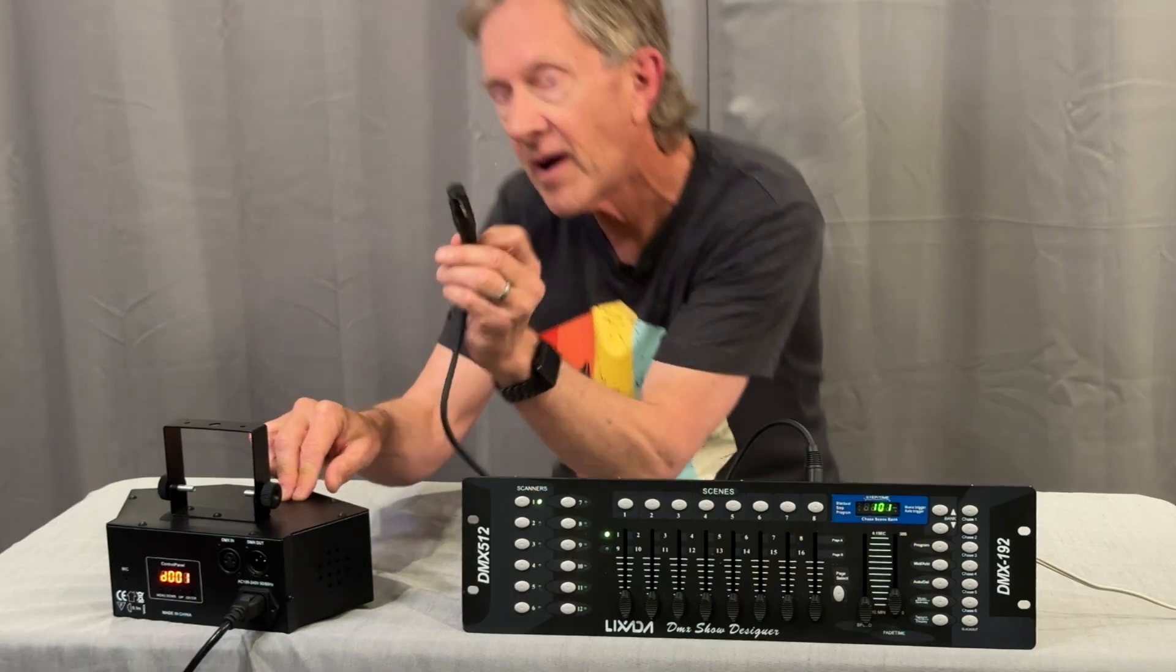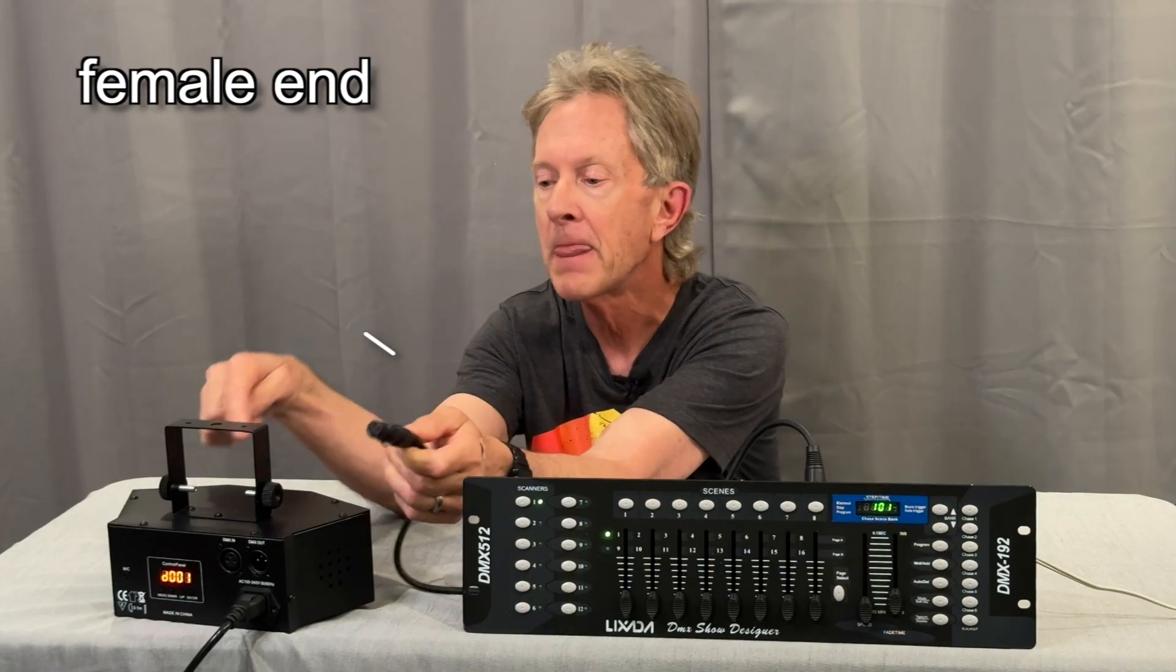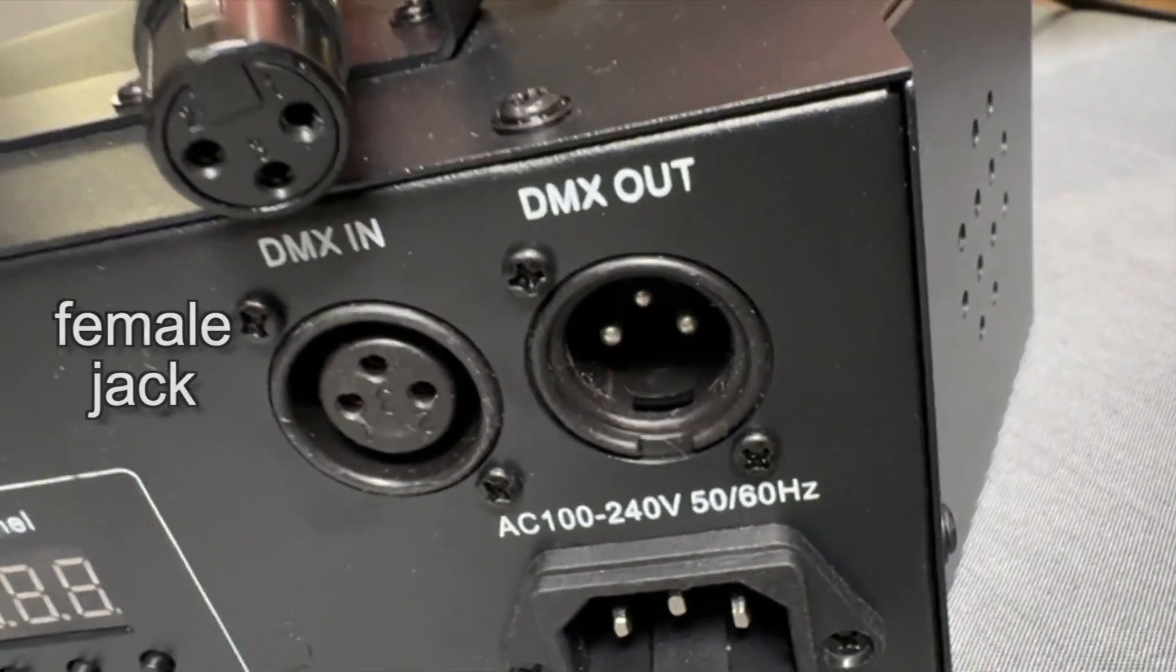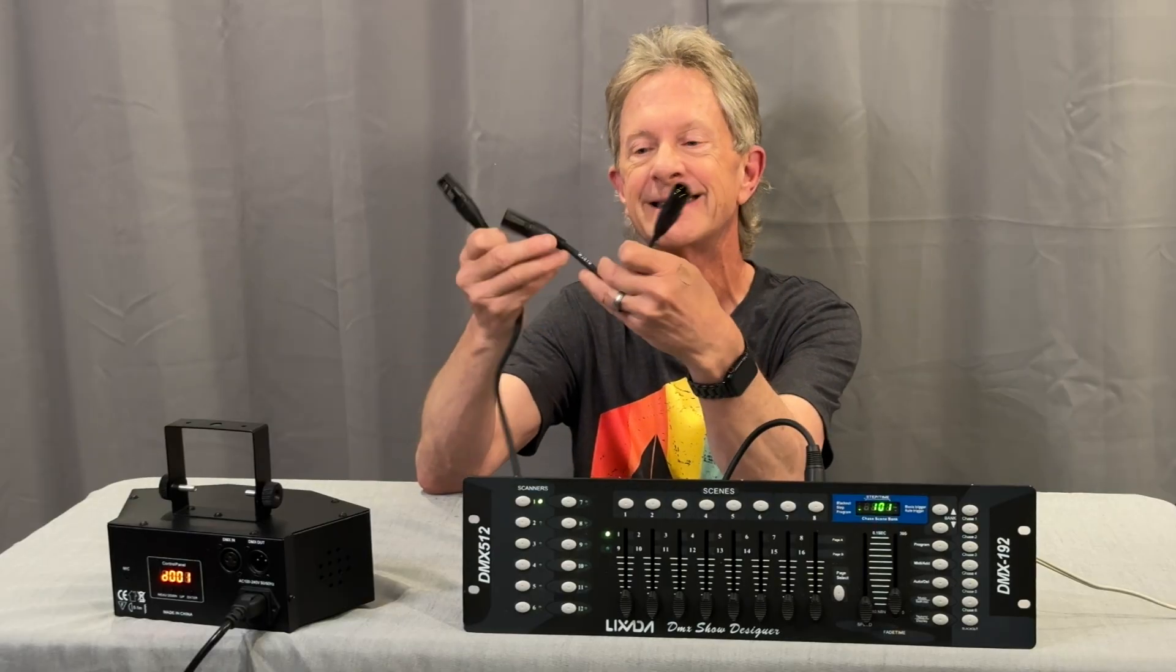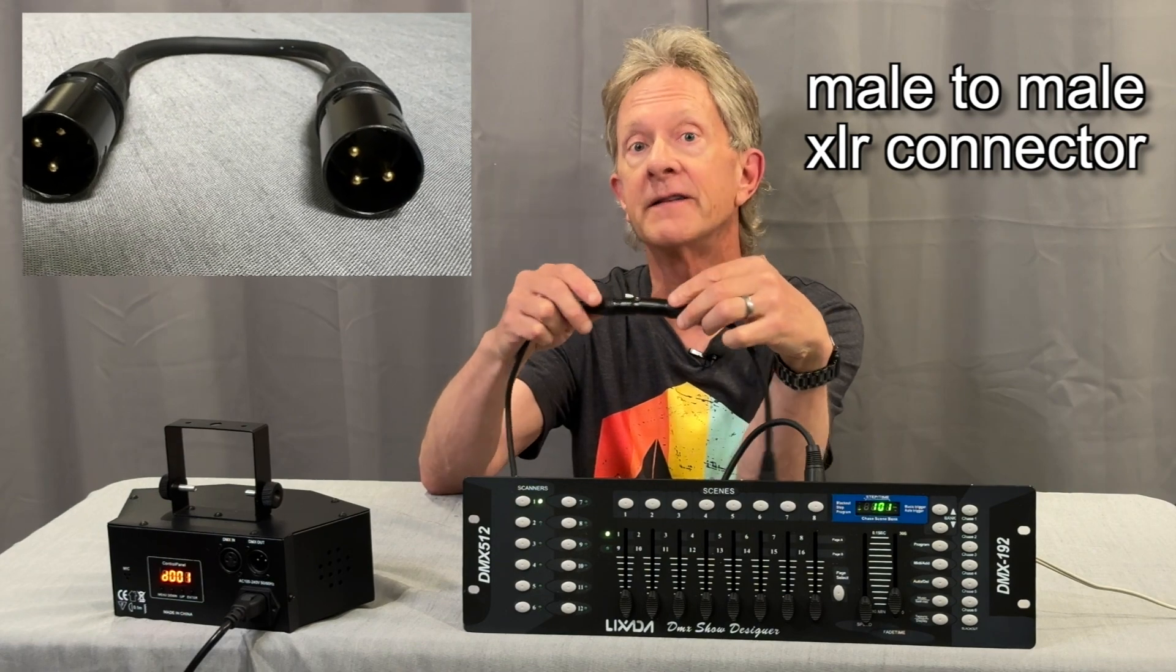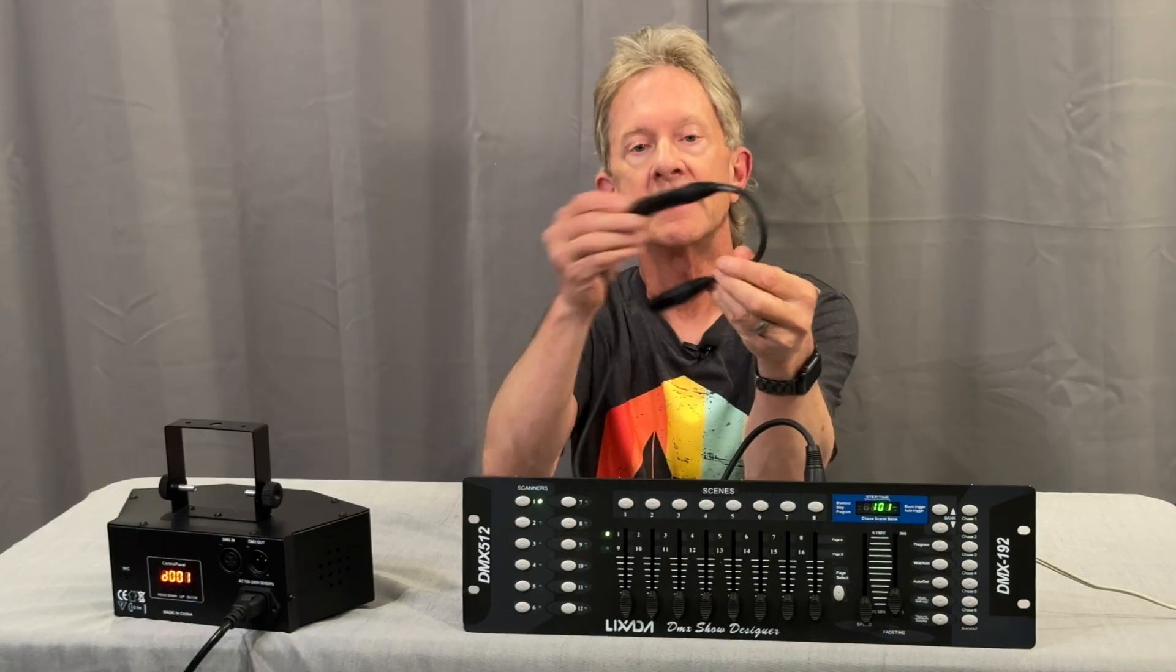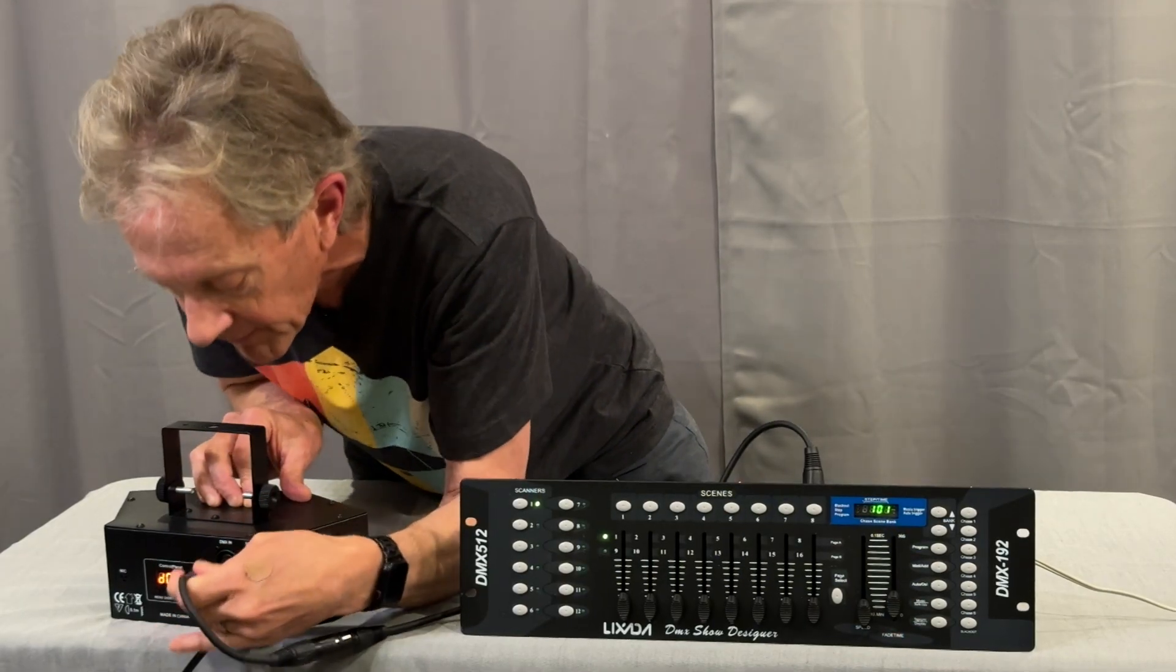But wait a second, there's a problem. This is a female end on this DMX cable. But the DMX in on the light is a female jack. So the only way to plug that in is if you've got something like this, which is an XLR male to male adapter. XLR and DMX cables are the same configuration with their pins. So I'm going to plug in the one end of the adapter to the end of the cable and plug this into the light.